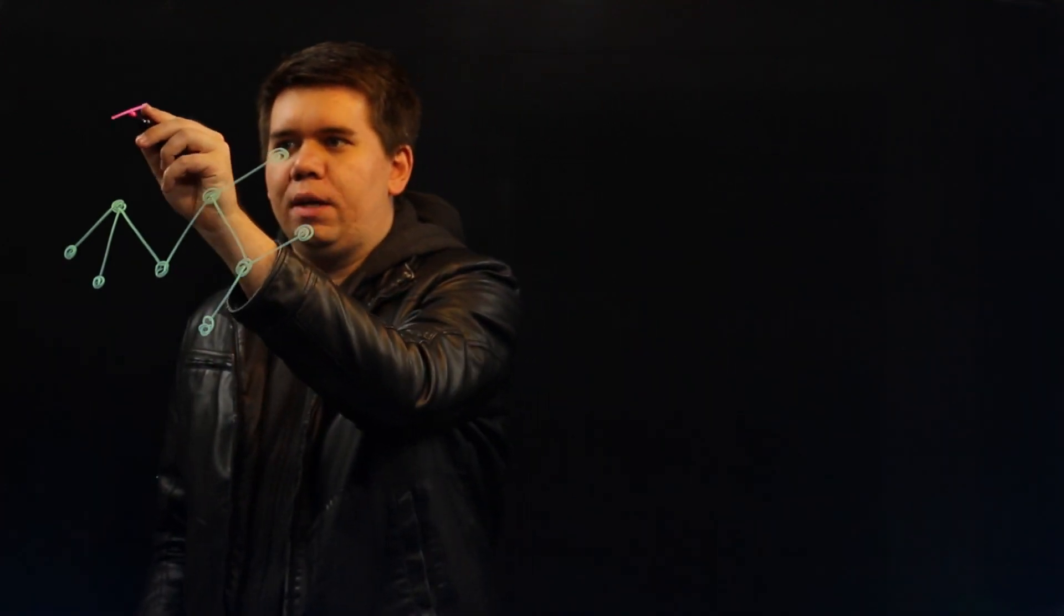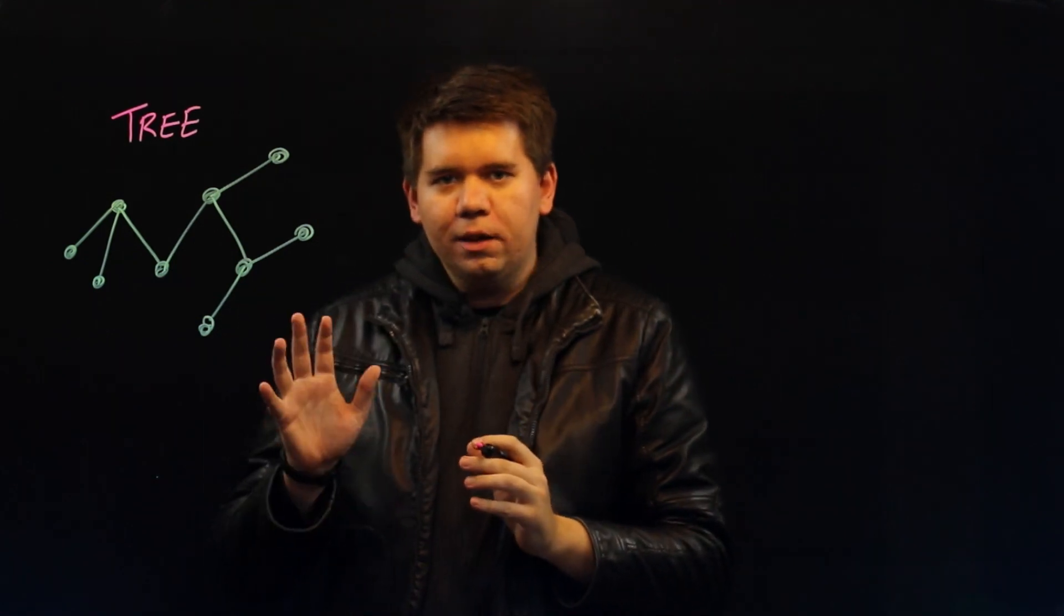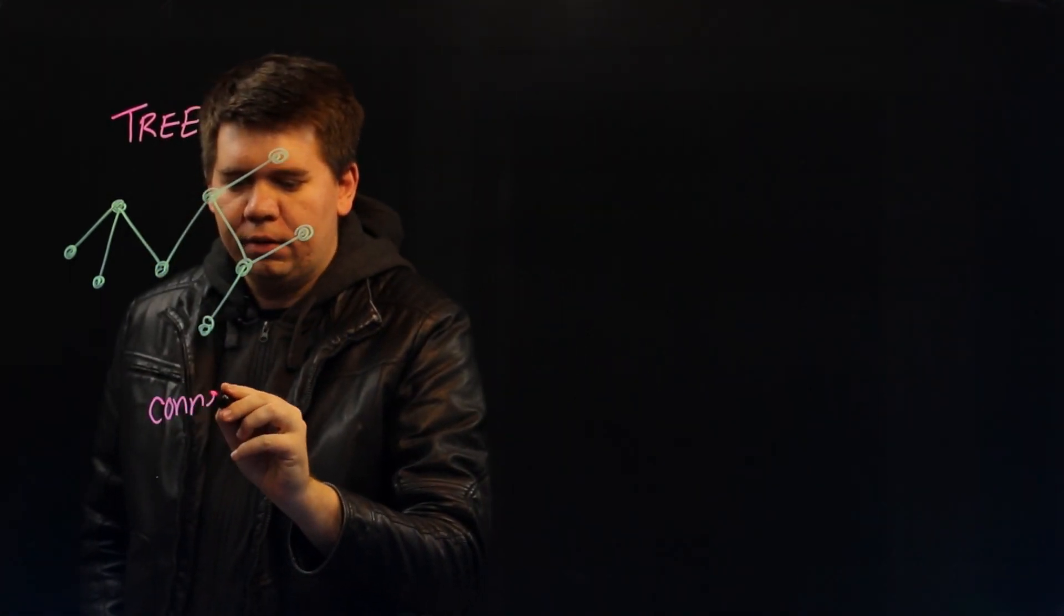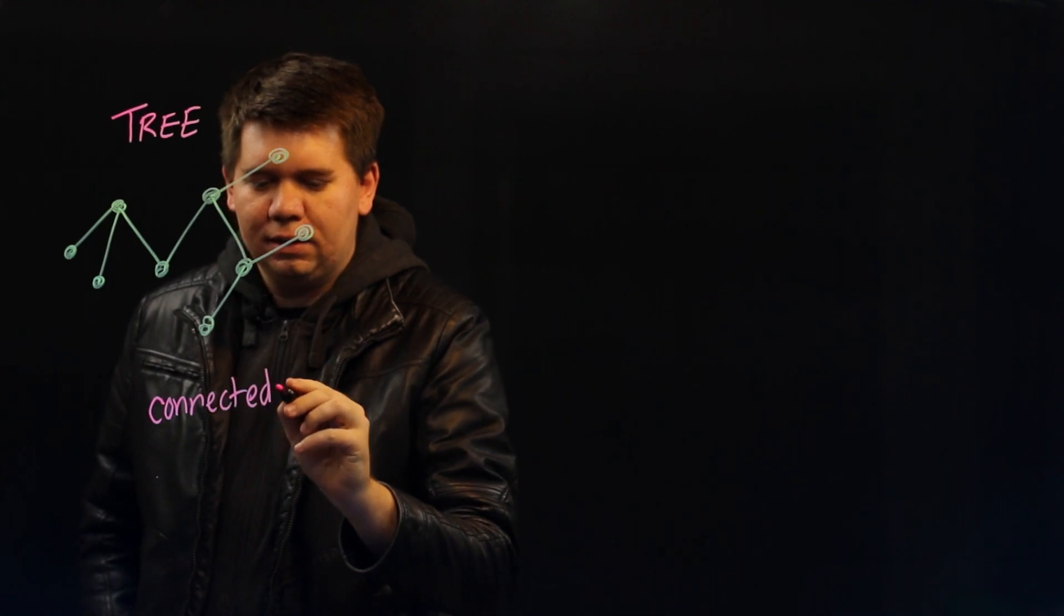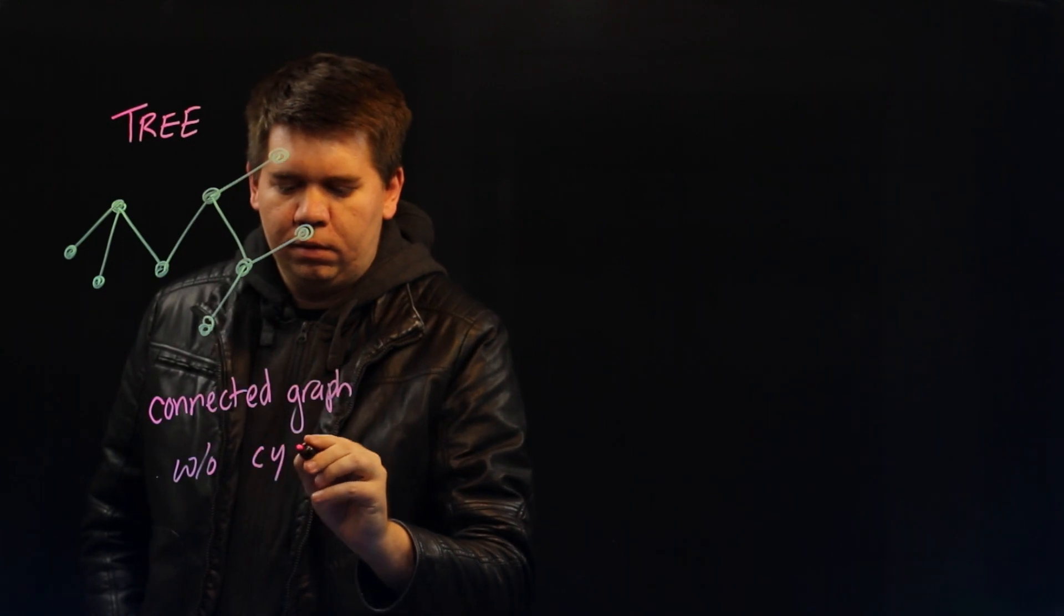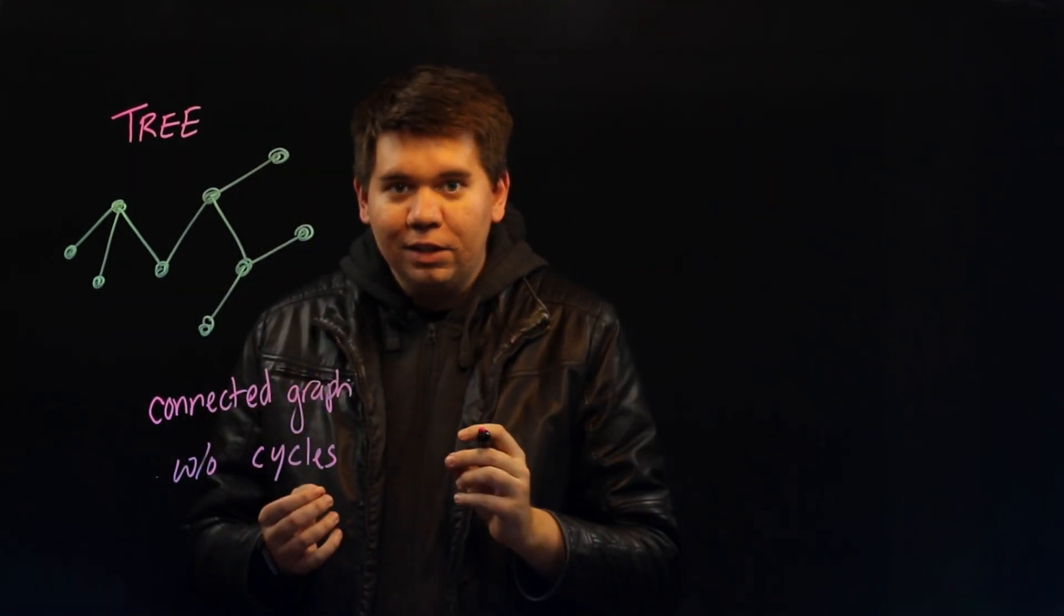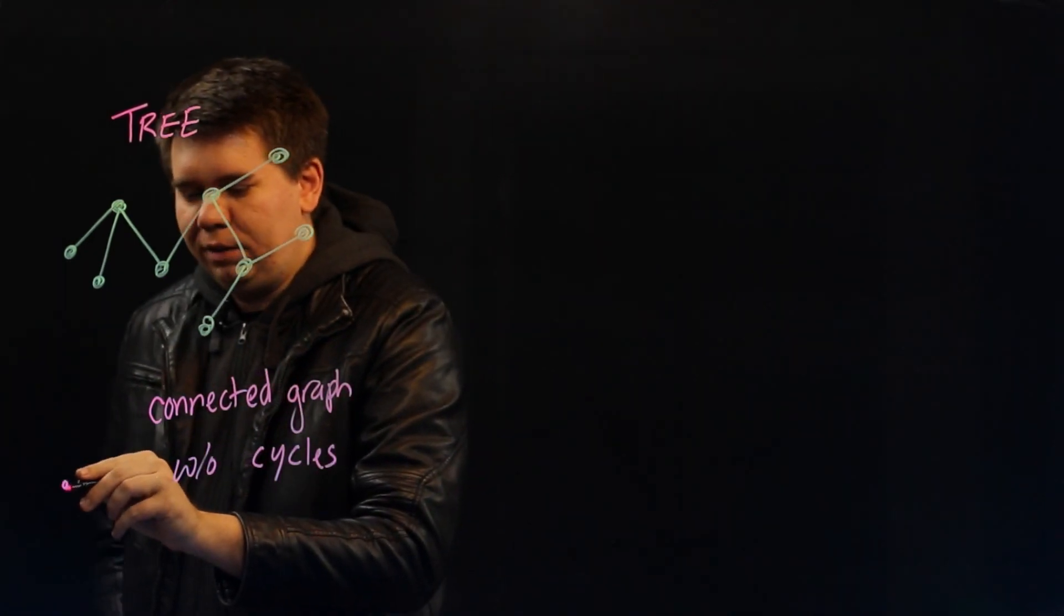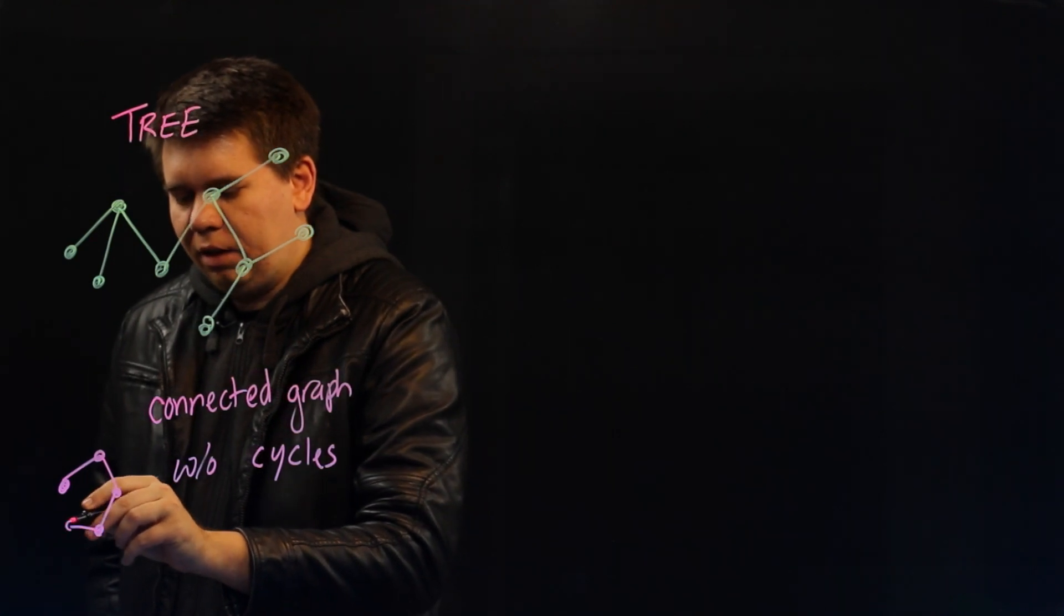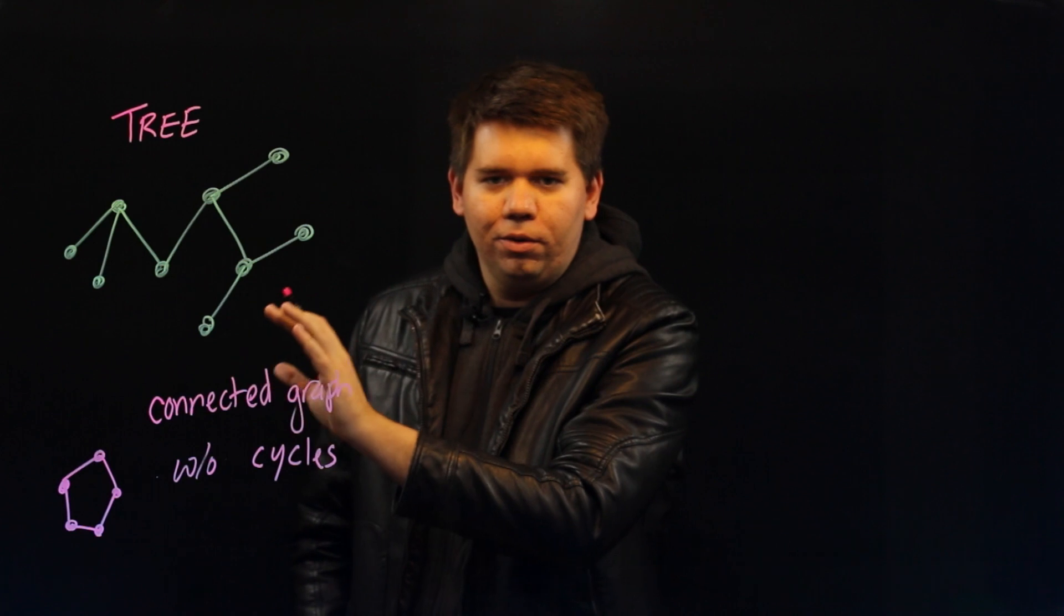Here we have a tree. One way to define a tree is a tree is just a connected graph without any cycles. We call a cycle just a collection of distinct edges and vertices that come together so that the first vertex is also the last vertex. It closes into a cycle.